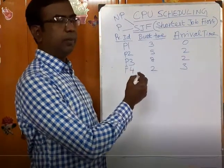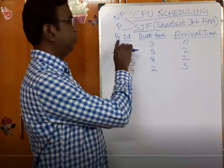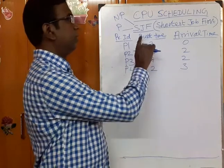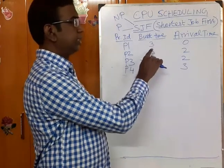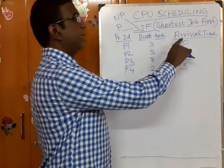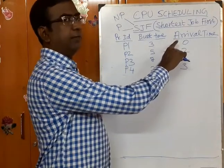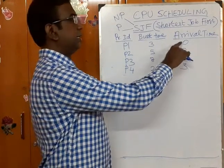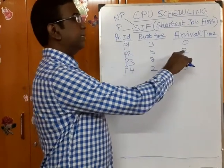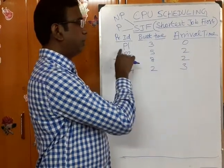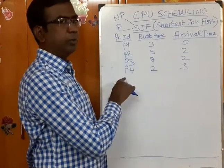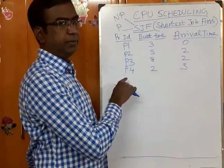According to this problem, we are having process IDs P1, P2, P3, P4 with CPU burst times of 3 seconds, 5 seconds, 8 seconds, and 2 seconds. We also have arrival times: at time 0, one process P1 is coming; at time 2, two processes P2 and P3 are coming; at time 3, the fourth process P4 is coming.